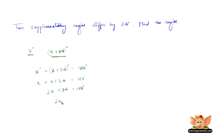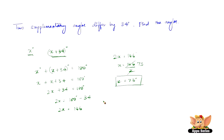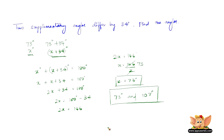So x plus (x plus 34) gives us 2x plus 34 equals 180. Then 2x equals 180 minus 34, which is 146, so 2x equals 146. Therefore x equals 146 divided by 2, which is 73 degrees. The other angle is 73 plus 34 equals 107 degrees. So the two supplementary angles are 73 degrees and 107 degrees, and their sum equals 180 degrees.